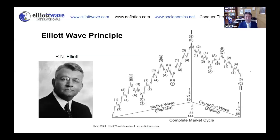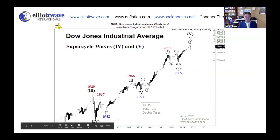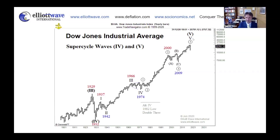With that in mind, here's our thesis of what we think is happening — the very long-term chart of the Dow, labeled super cycle waves four and five. The 1929 crash was super cycle degree wave four into the 1932 low. Everything from 1932 has been a series of waves, and we think cycle degree wave five of super cycle degree wave five is coming to an end. It looks like this year could have been the actual end of that cycle, and the stock market could be due a correction which could last for some time.